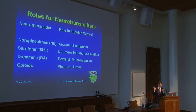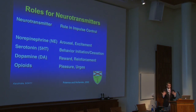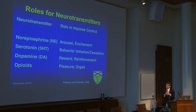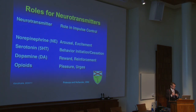We used this as a framework for testing hypotheses, superimposing roles for specific neurotransmitters: norepinephrine systems particularly relevant to arousal and excitement; serotonin systems particularly relevant to behavioral initiation, cessation, and impulse control; dopamine systems particularly relevant to reward and reinforcement; and opioid systems to pleasure and urges. Understanding that these are oversimplifications and that the brain functions more at a neurocircuitry level involving an interplay of these neural circuits and neurotransmitter systems.